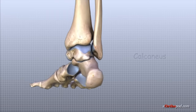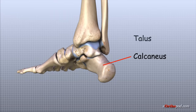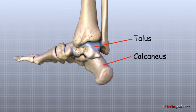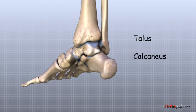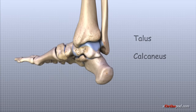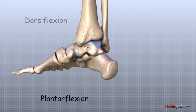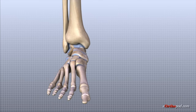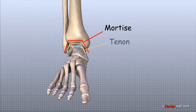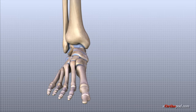The bottom of the talus sits on the calcaneus, the bone that makes up the heel. The talus works like a hinge inside the ankle socket to allow your foot to move up, called dorsiflexion, and down, called plantarflexion. The ankle socket is sometimes referred to as the mortise of the ankle because the structure of the ankle joint is similar to a joint used in woodworking called a mortise and tenon joint, which has been used by craftsmen for centuries to create strong, sturdy connections in furniture and buildings.